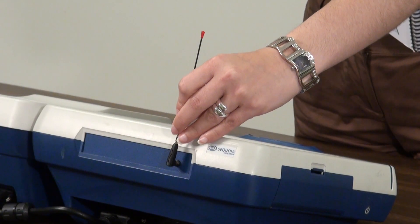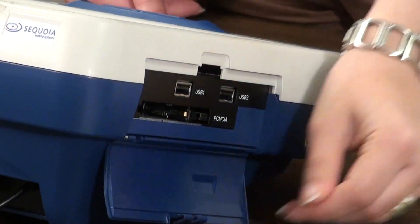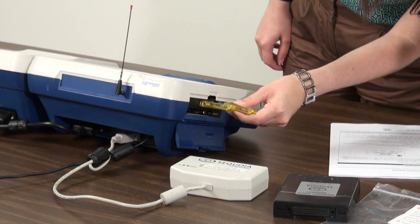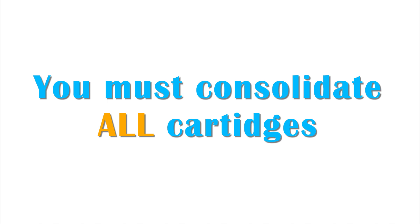First, raise the antenna on the back of the card activator. Open the door on the left side of the card activator and insert both results cartridges from the touchscreens. A green light will appear on each cartridge. Consolidate cartridges at the same time from all touchscreens, even if a machine was not used during the day.